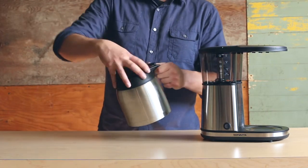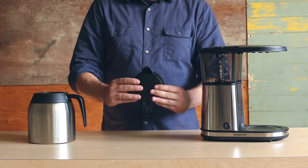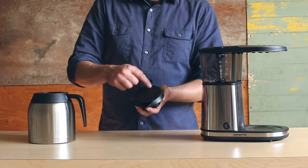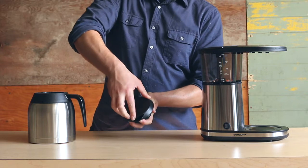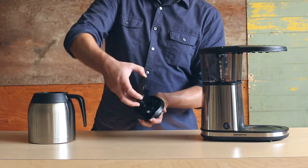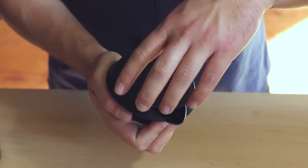Remove the disc on the carafe lid by holding down the disc, twisting it counterclockwise, and pulling it up once loosened. Place both pieces on the top rack of a dishwasher or wash by hand.